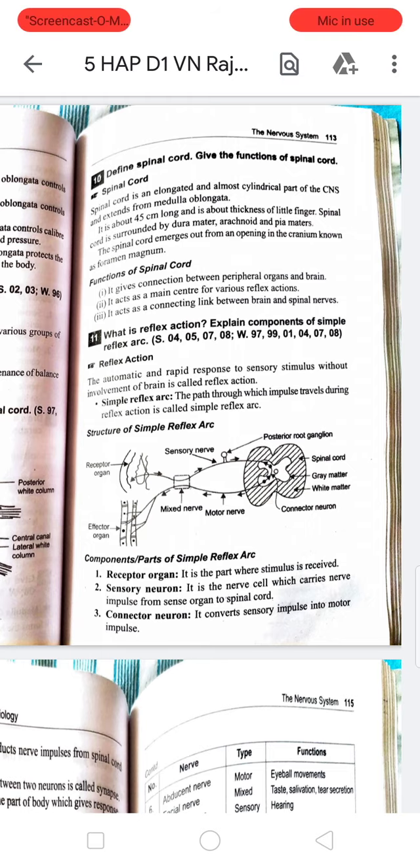The receptor organ is the skin with nerve endings. The effector organ is striped muscles. You should note sensory nerve, mixed nerve, motor nerve, then gray matter and white matter. Spinal cord is also visible in the diagram.